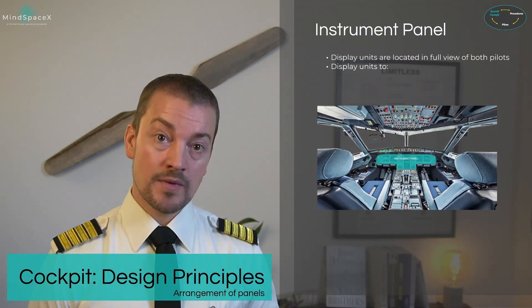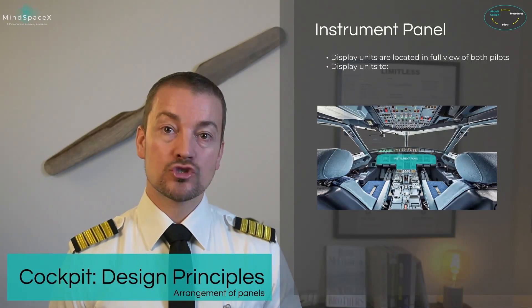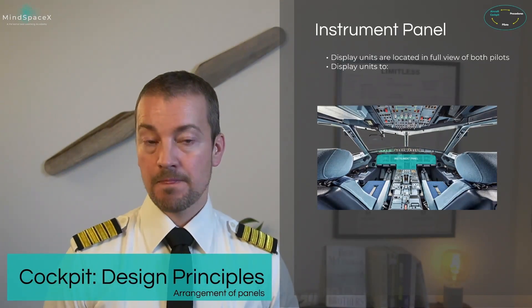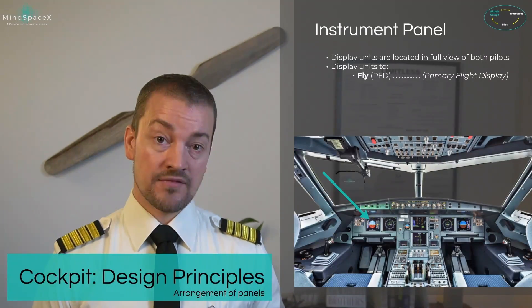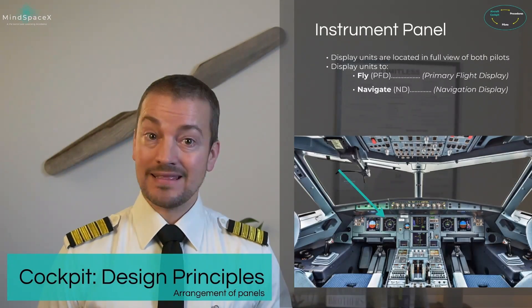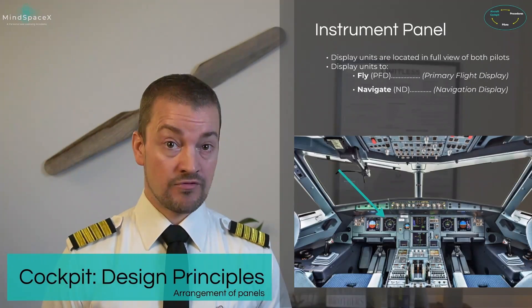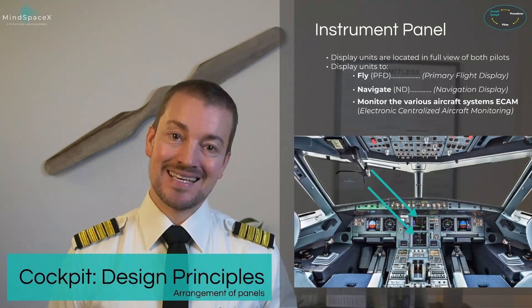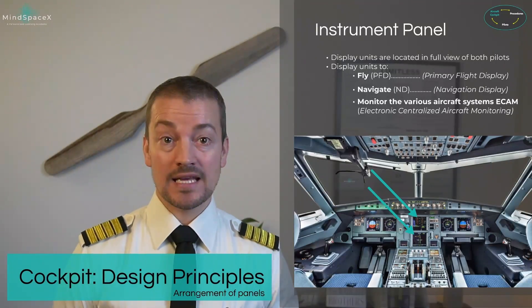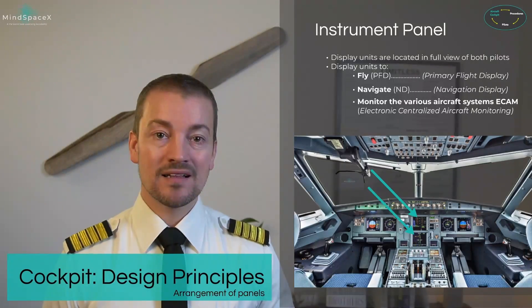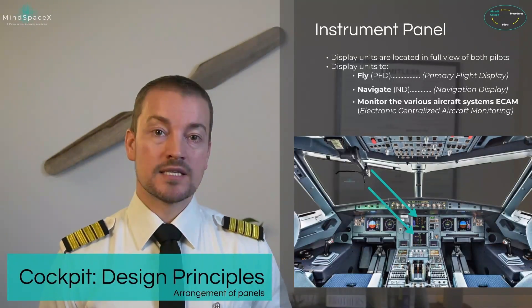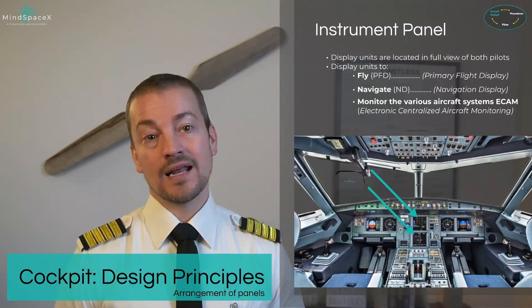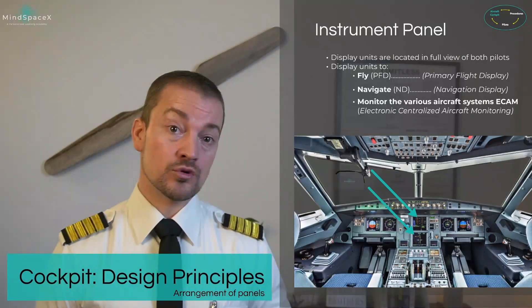And now the instrument panel. The instrument panel in front of the pilots ensures display units that are in full view for both pilots to see. The display units are the PFDs — one for each pilot — the NDs, the navigational displays, one for each pilot, and then two screens in the middle known as the ECAM, Electronic Centralized Aircraft Monitoring. We go into a lot of detail in the indicating and recording session on the ECAM, and there is a specific lesson on ECAM handling, so make sure you watch those as well.